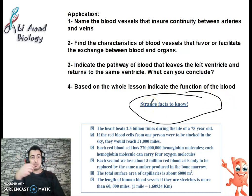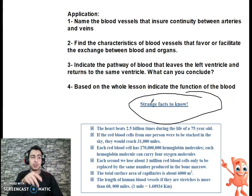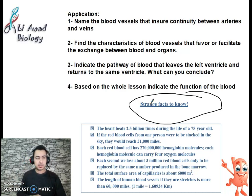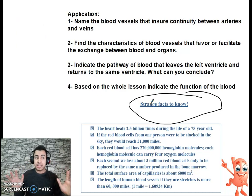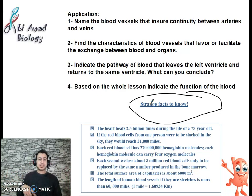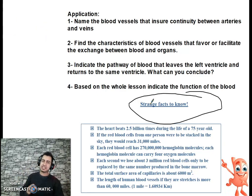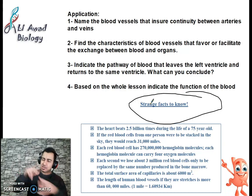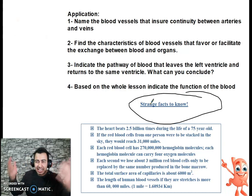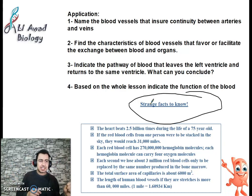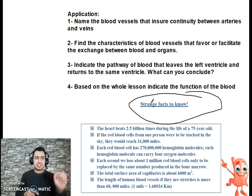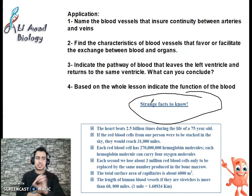The heart beats 2.5 billion times in the life of 75 years. If the red blood cells from one person were to be stacked in the sky, they would reach 31,000 miles, about 45,000 kilometers. Each red blood cell has 270 million hemoglobin molecules. Each hemoglobin molecule carries 4 oxygen molecules. Each second we lose about 3 million red blood cells, only to be replaced by the same number produced in the bone marrow.